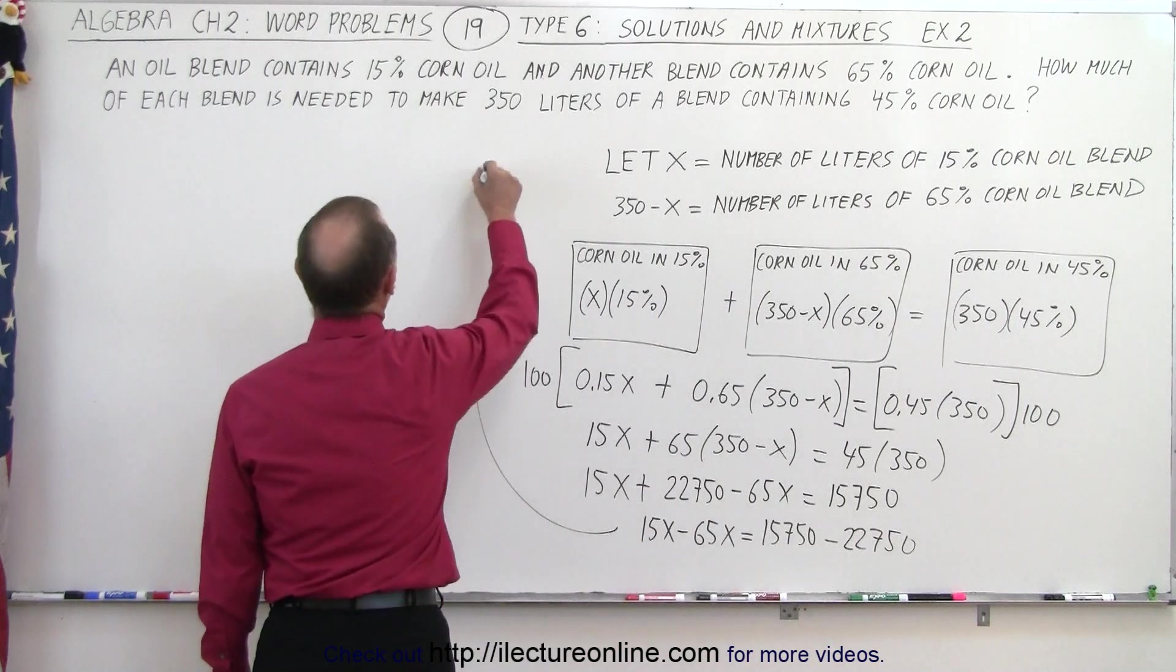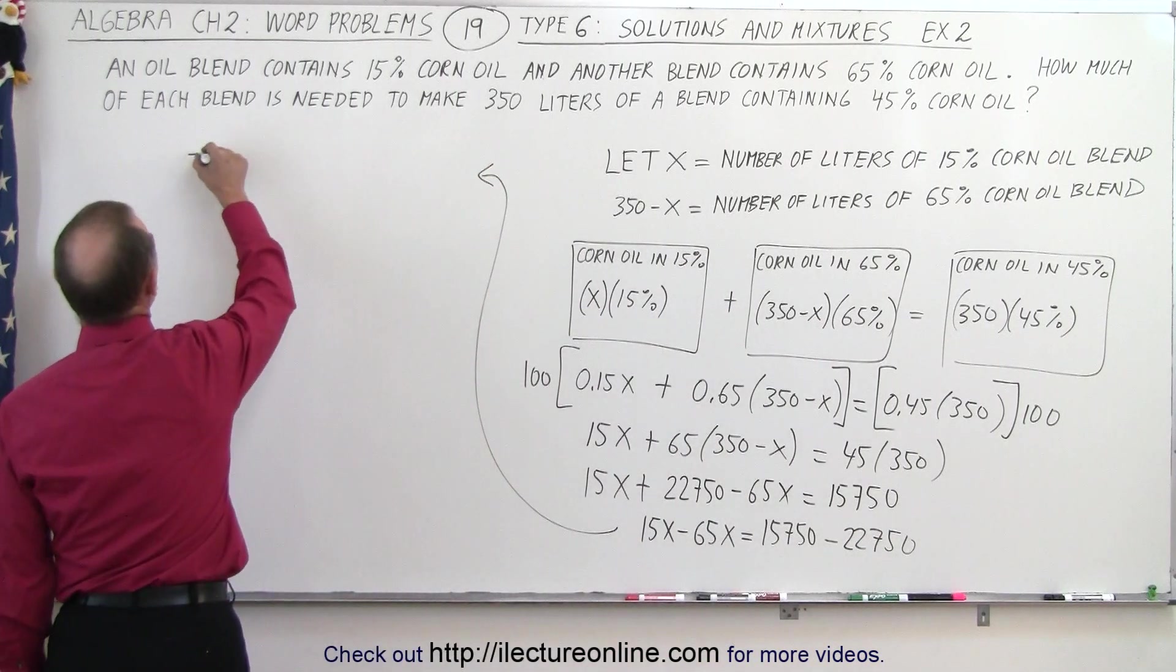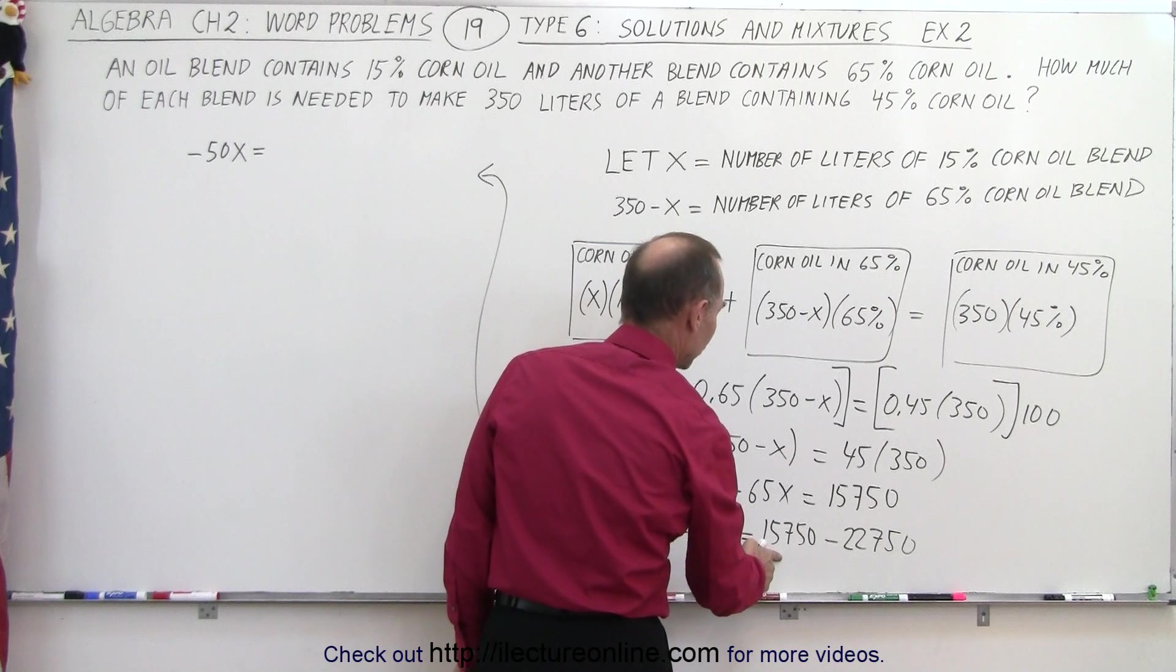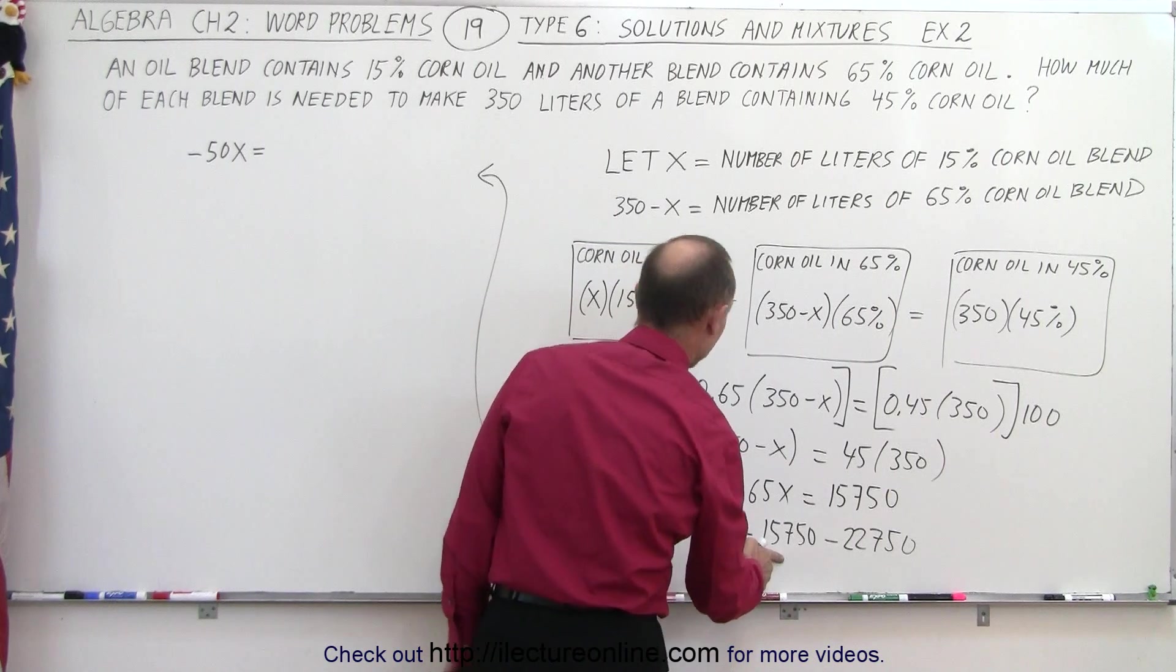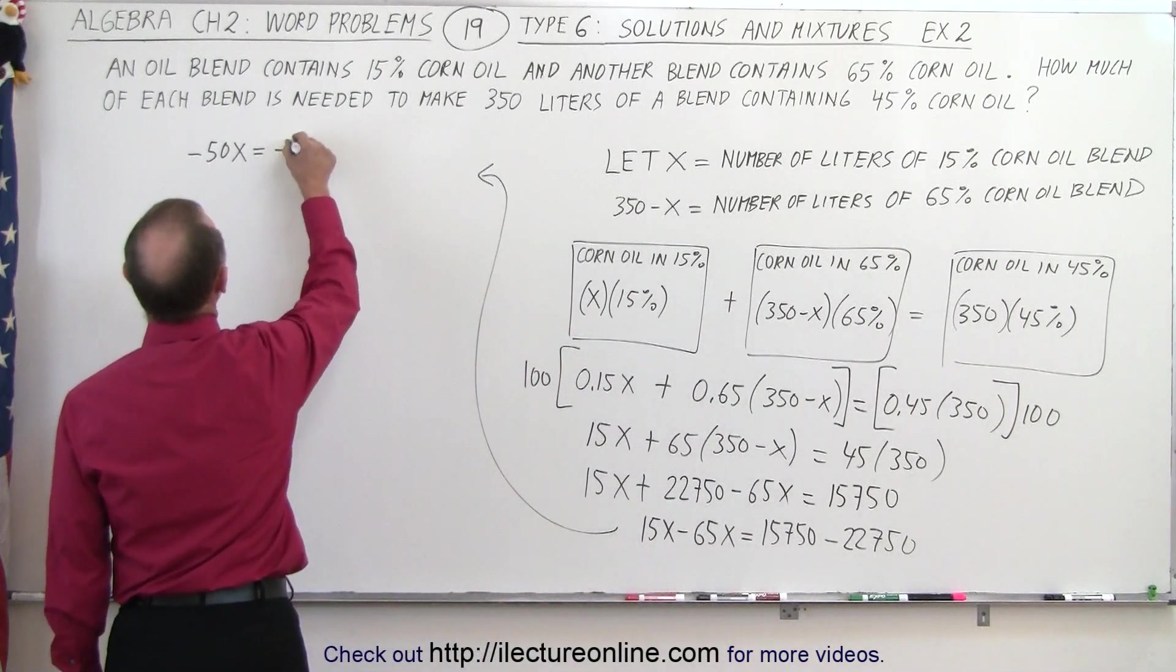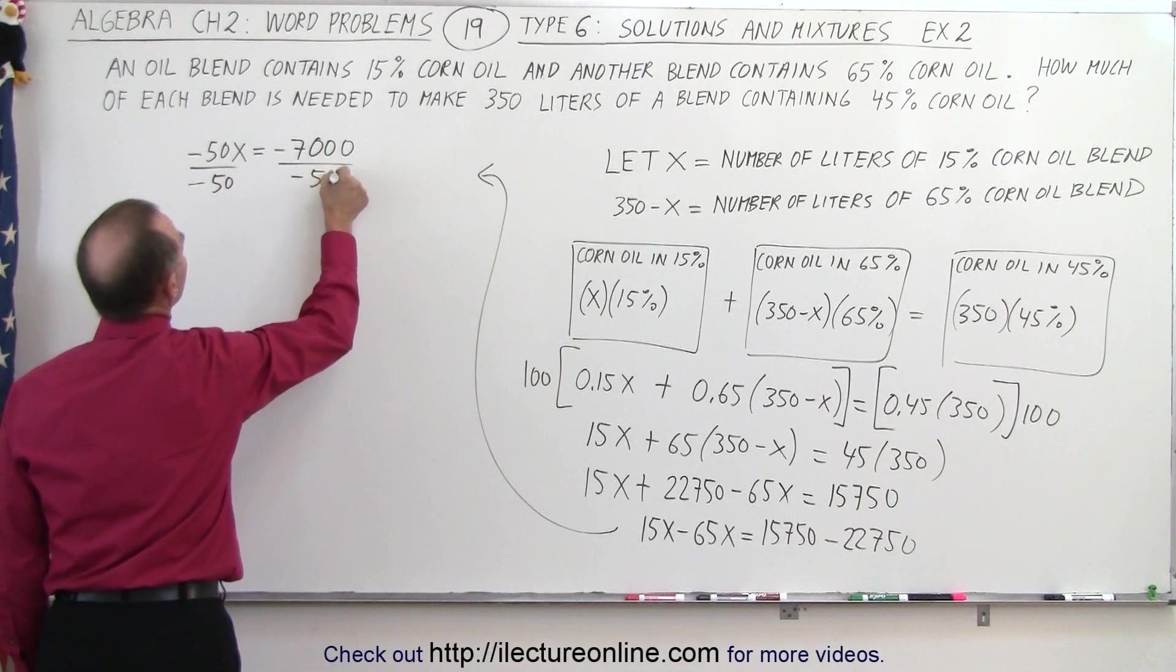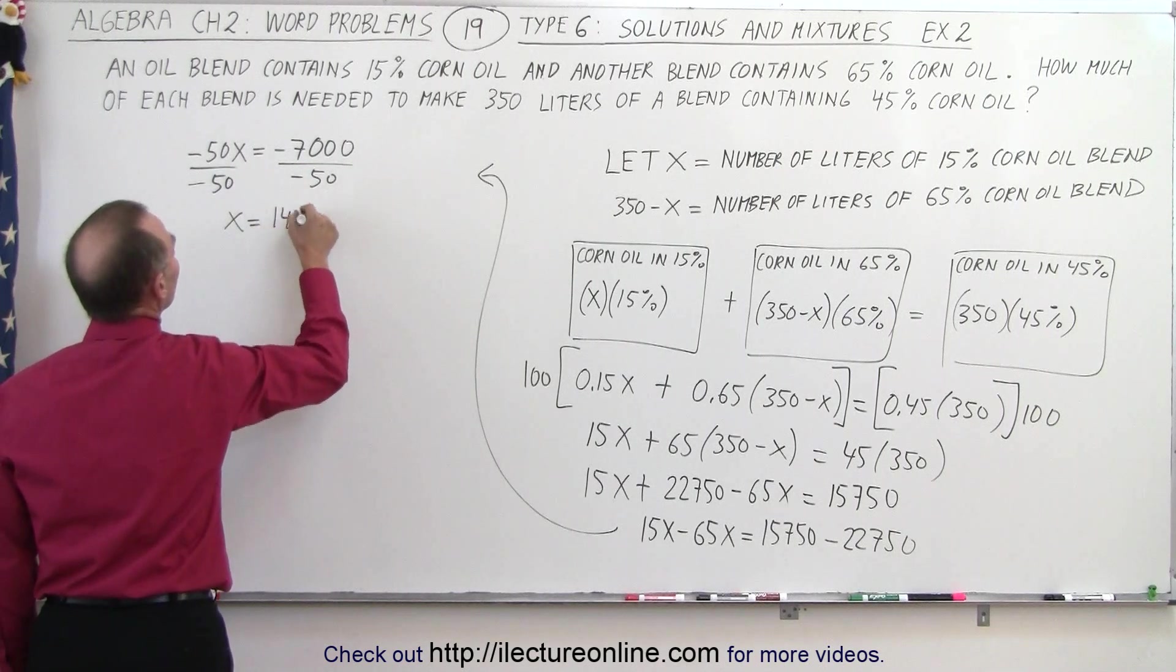Now coming over here and completing the problem, 15 minus 65, that would be minus 50x is equal to minus 7,000, which means we're going to divide both sides by minus 50. So x is therefore equal to 140.